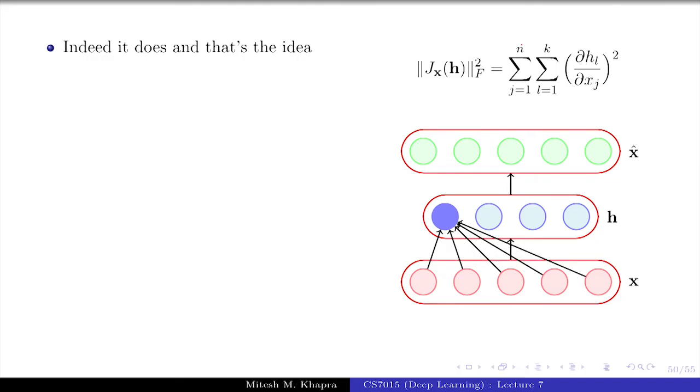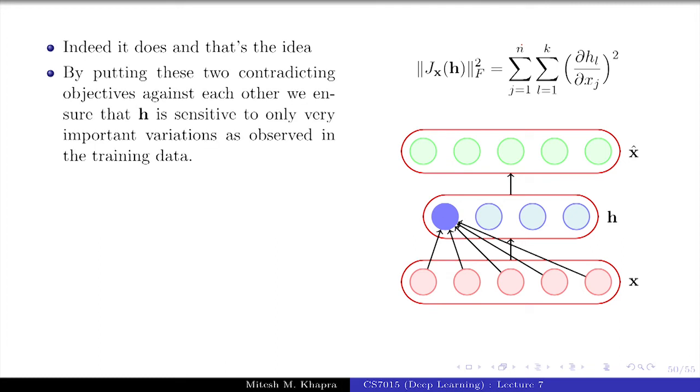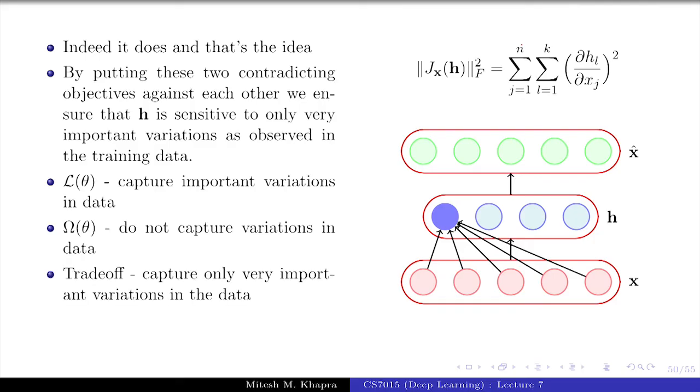That is the actually the idea. We have put these two contradictory conditions with each other. L(theta) says capture the important variations of the data. Omega(theta) says do not capture variations in the data. What is the trade-off? Capture only very important variations in the data, do not capture the variations which are not important. Can you relate this to something that you have seen before?